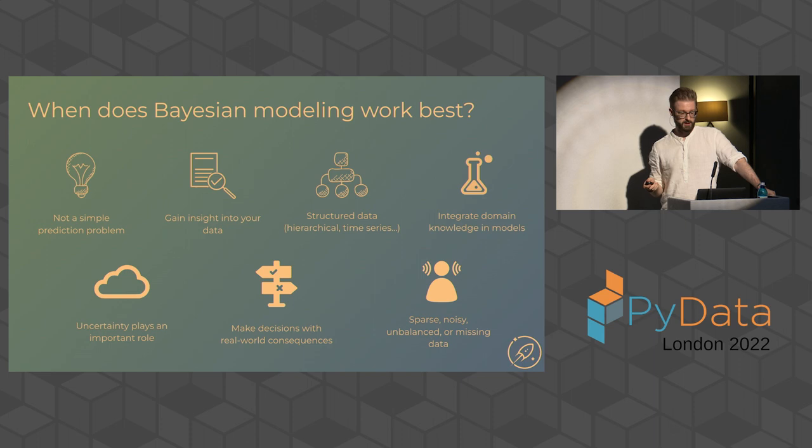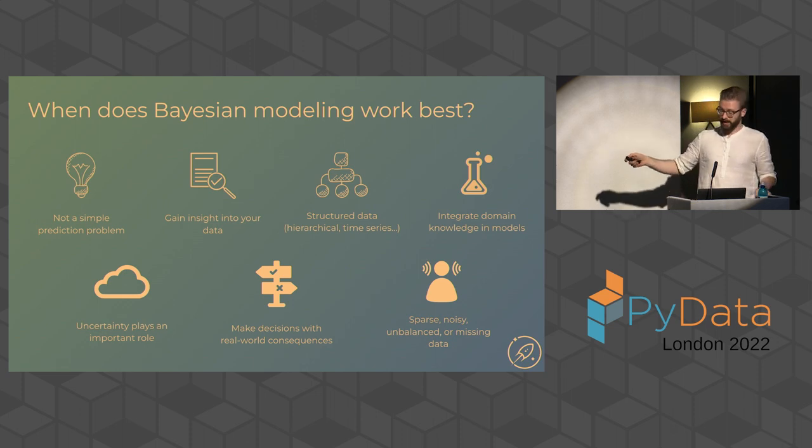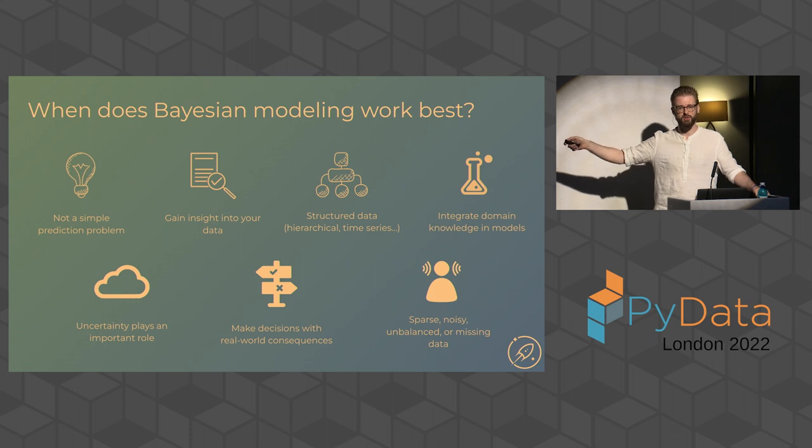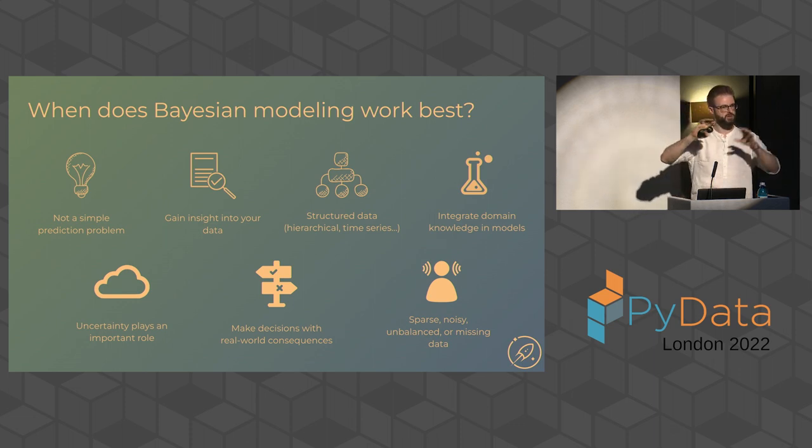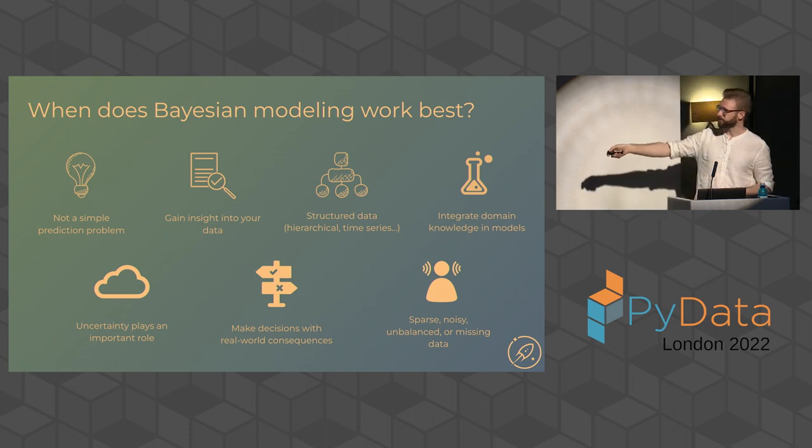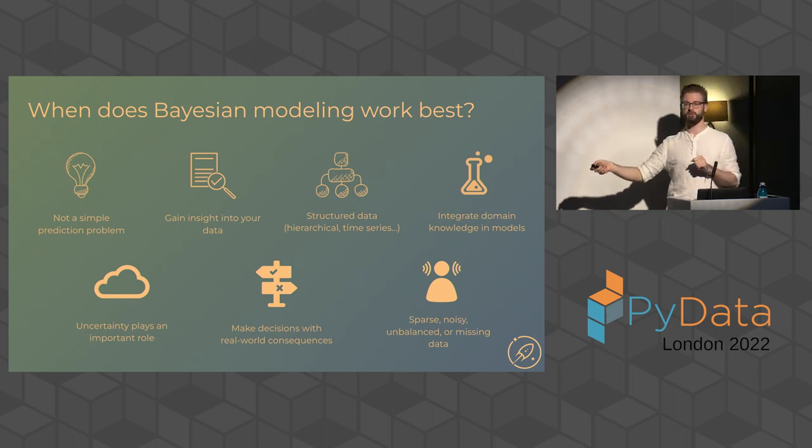And this can be done, of course, in many different scenarios as well. So when does Bayesian modeling work best? To summarize this, whenever you don't have a simple prediction problem, you want to learn something about your data, you want to gain insight into your data. And you have structured data, like maybe you have nested hierarchical structure in there, you have time series, some causalness that you know something about, allows it to integrate domain knowledge. And when you're making real world decisions, uncertainty often plays a really big role. So you want to make sure to incorporate that.